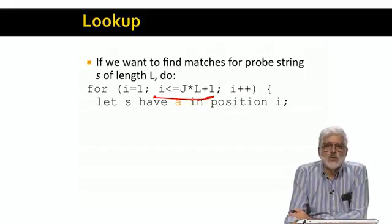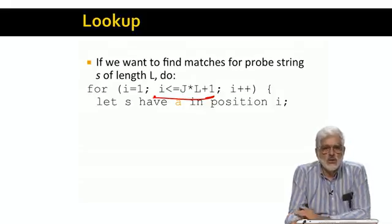The first thing we do is determine the symbol A in the position I of string S. We need that to limit the buckets we search to only with the right symbol. Again, that's just like the earlier lookup.